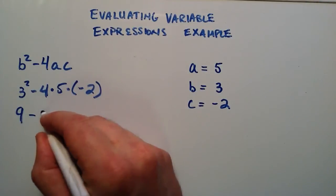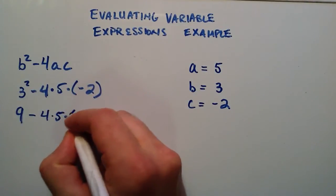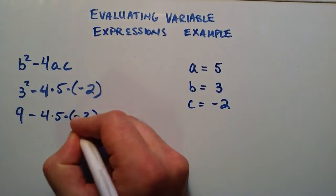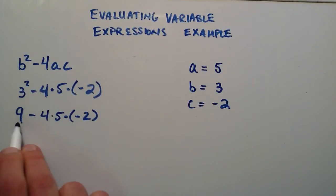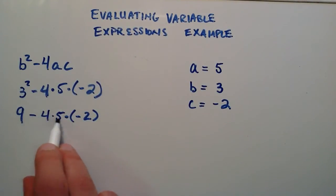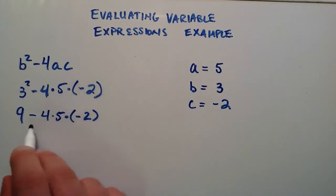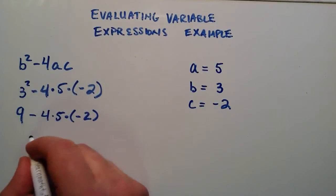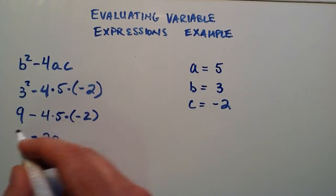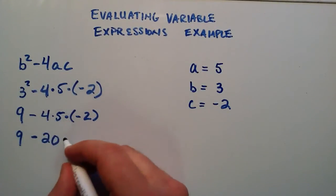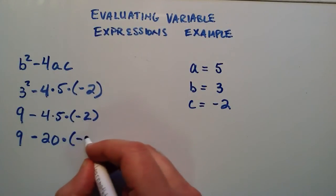And then we subtract 4 times 5 times negative 2. So now we have a subtraction and we have two multiplications left. We start with the multiplication on the left hand side first. And that becomes 4 times 5 which is simply 20. We'll put the 9 out front. And then we multiply that by the negative 2.